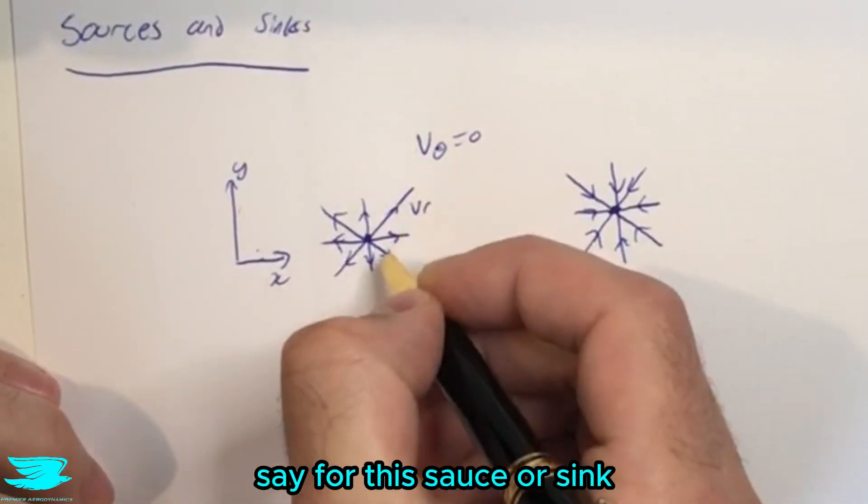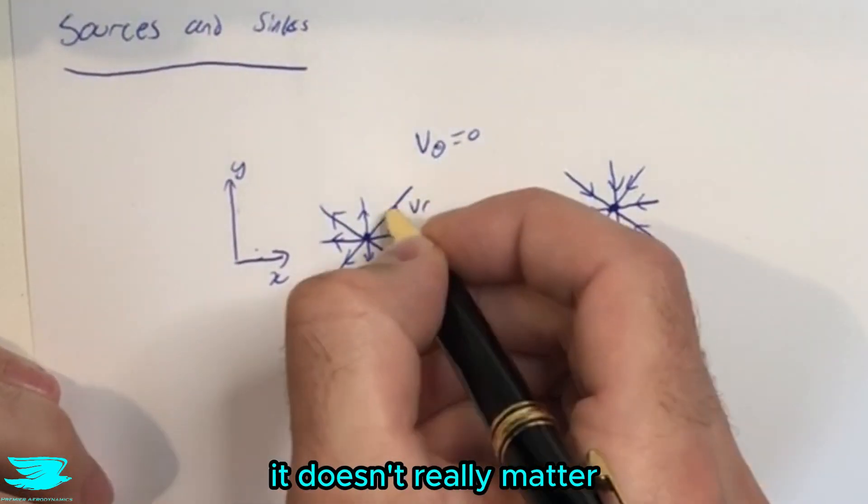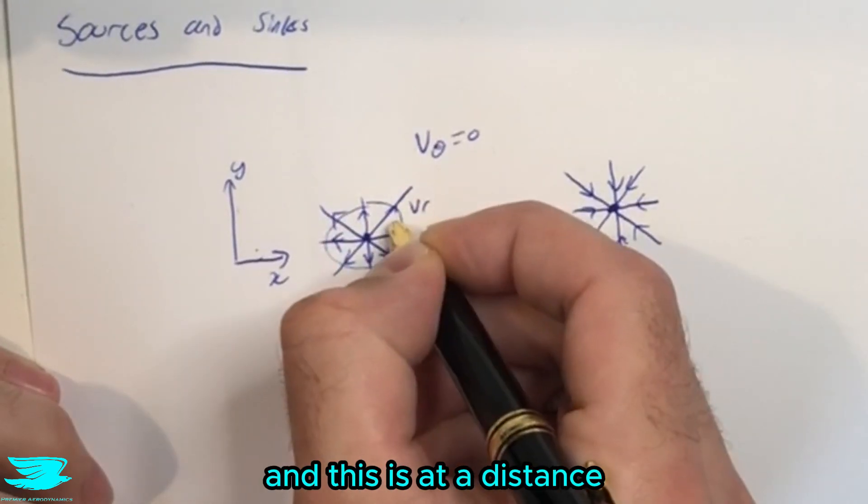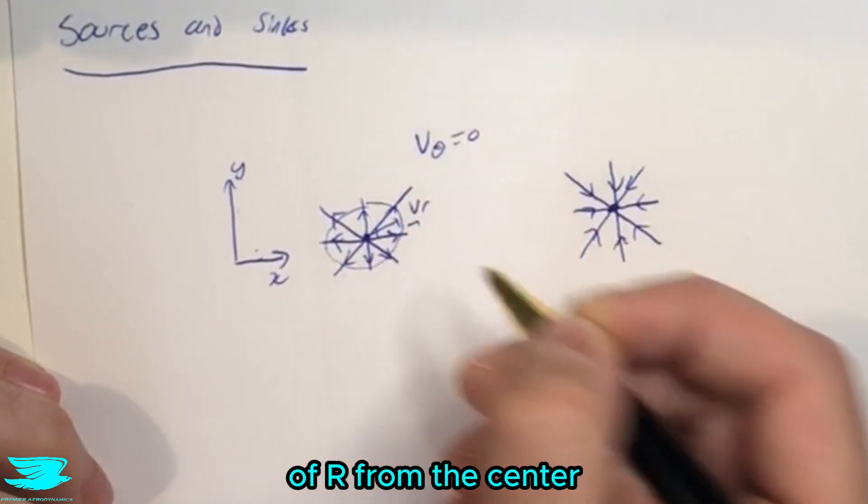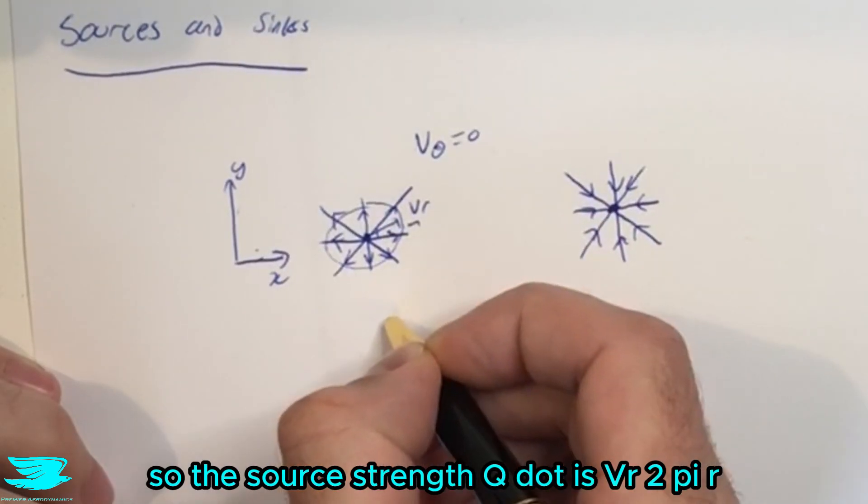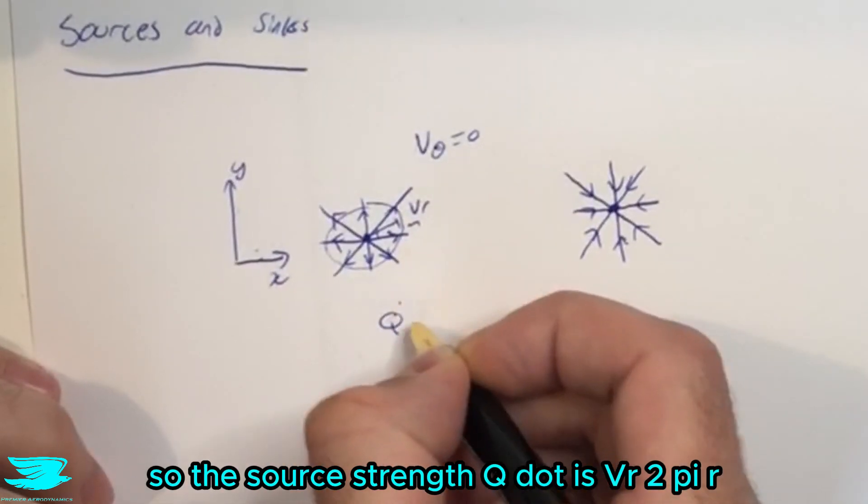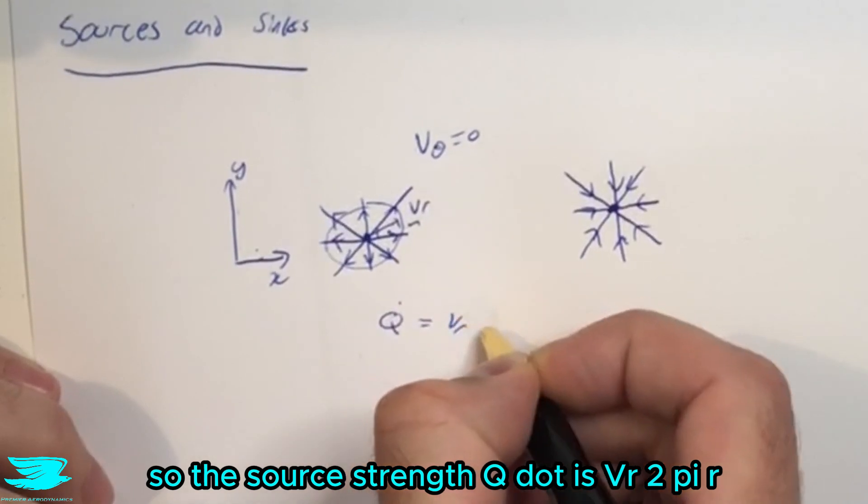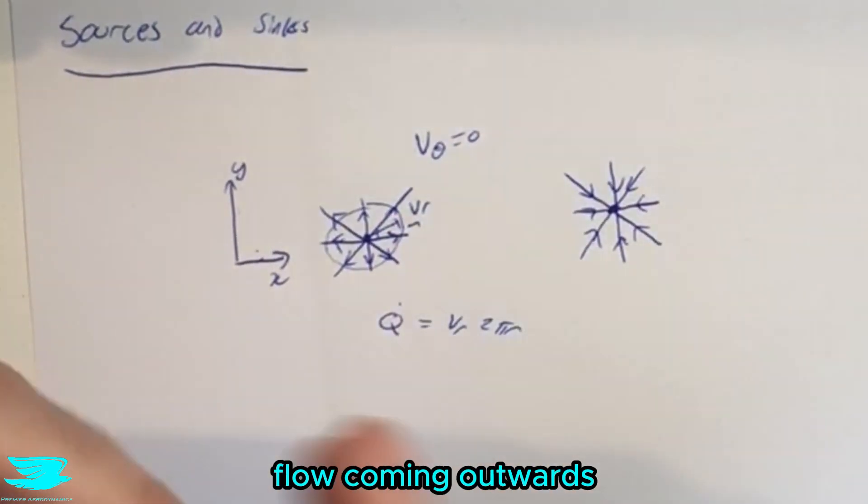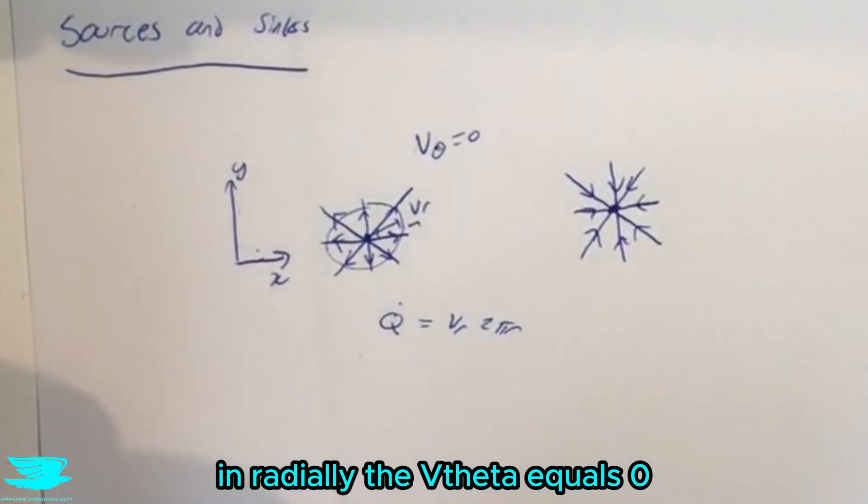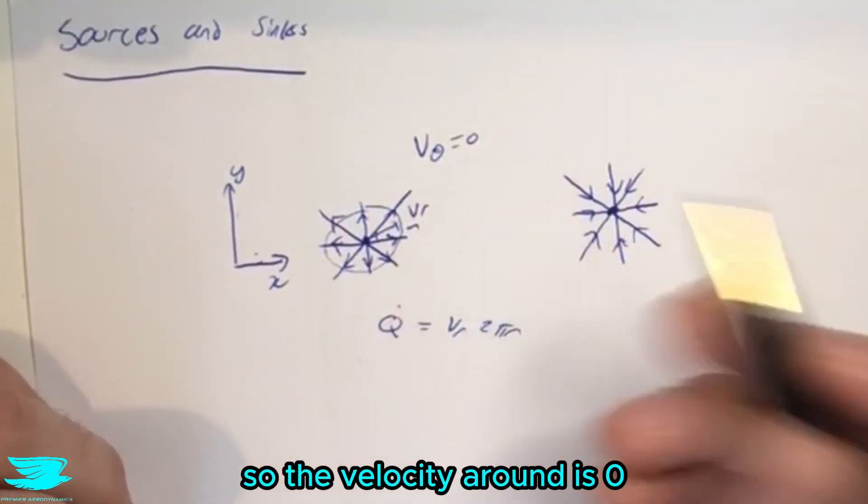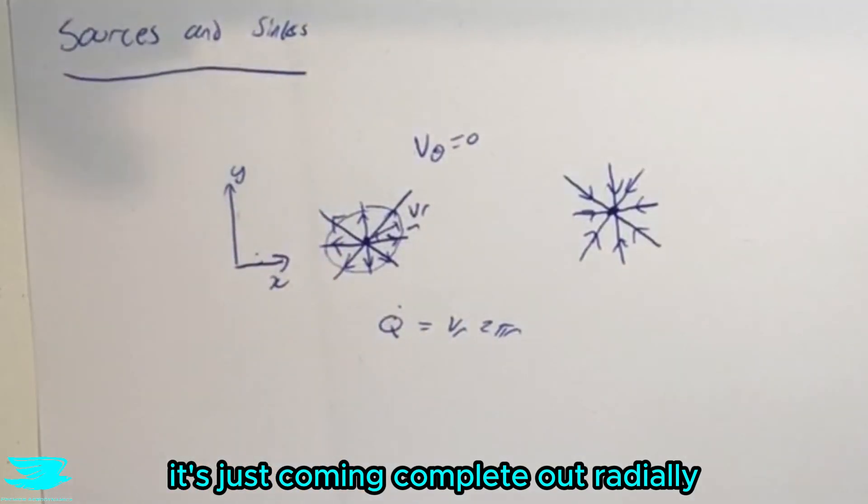So to begin with, let's say for this source, or sink it doesn't really matter, but just for the source we have a line around there, a circle, and this is at a distance of r from the center, so that radius is r. So the source strength q dot is v_r times 2πr. So v_r is the velocity of the flow coming outwards radially. The v_θ equals zero, so the velocity around is zero, it's just coming completely out radially.